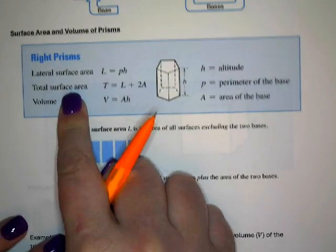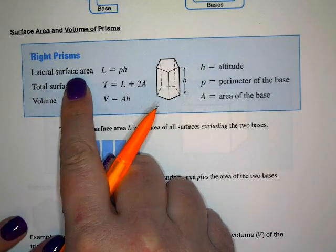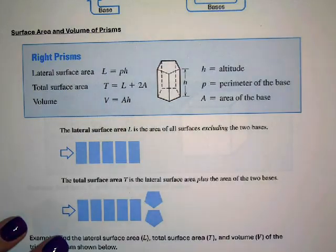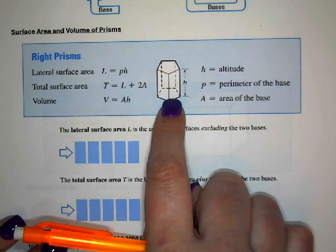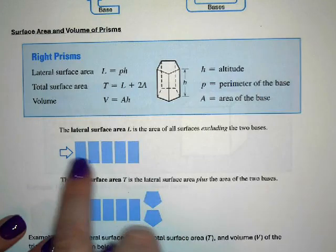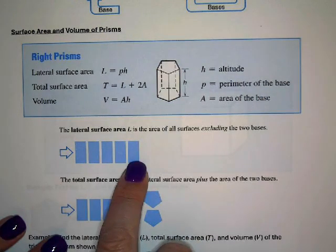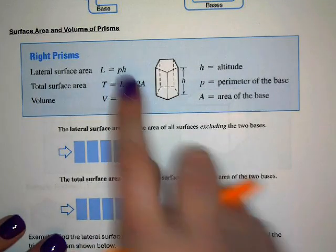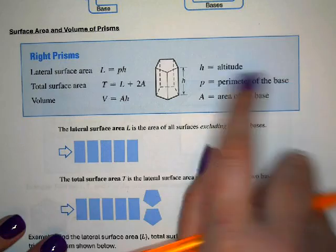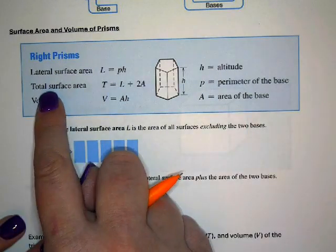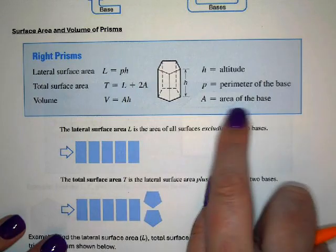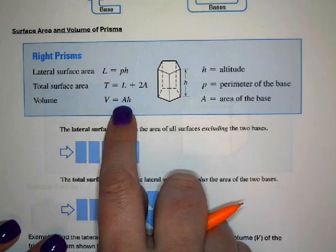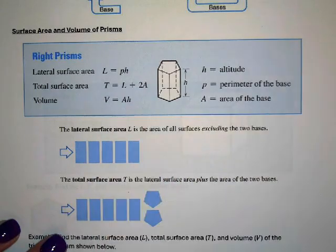Now we'll calculate surface area and volume of prisms. The lateral surface area only includes the lateral sides — not the bases. For a pentagonal prism, you'd use only the five rectangles around the side. Lateral surface area equals p times h, where p is the perimeter of the base and h is the altitude. Total surface area equals lateral surface area plus 2 times a, where a is the area of the base. Volume equals a times h.